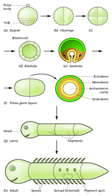Growth involves both an overall increase in size and also the differential growth of parts, which contributes to morphogenesis. Growth mostly occurs through cell division but also through changes in cell size and the deposition of extracellular materials.